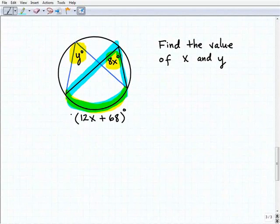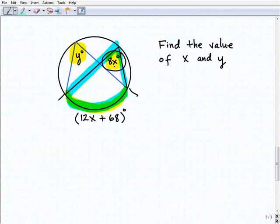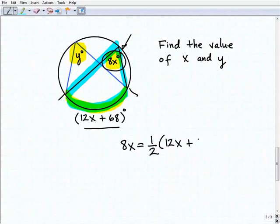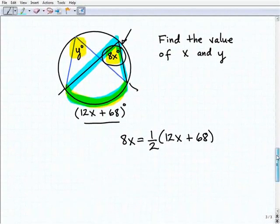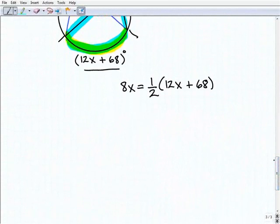The arc, the measure of this arc is 12x plus 68. That's this intercepted arc right here. And going back to that theorem that we learned in the lesson, the measure of an inscribed angle is half the measure of its intercepted arc. So I'm going to focus on this particular angle right here, because it has x in it, and this has x in it. So I can write an equation that has just the variable x. So 8x, that inscribed angle is half the measure of the intercepted arc 12x plus 68. At this point, if you haven't tried to solve this equation, now's a good time to see if you can solve it.